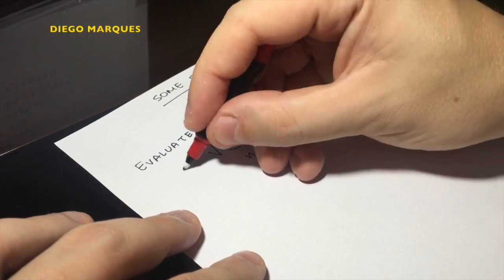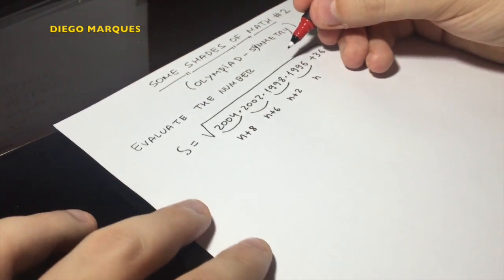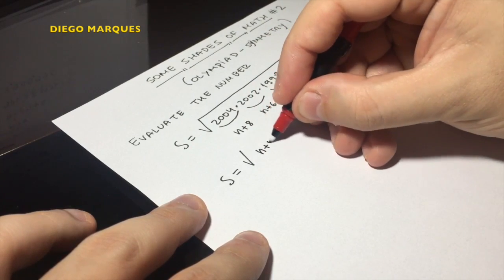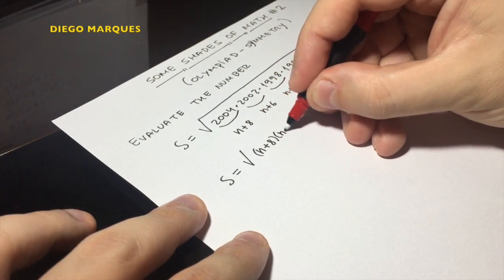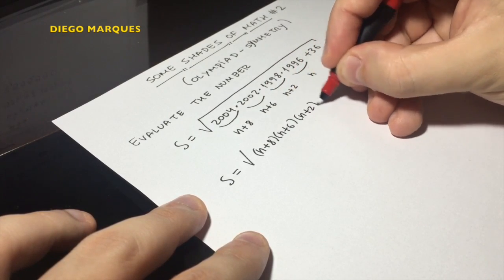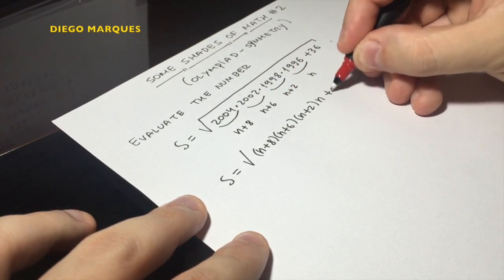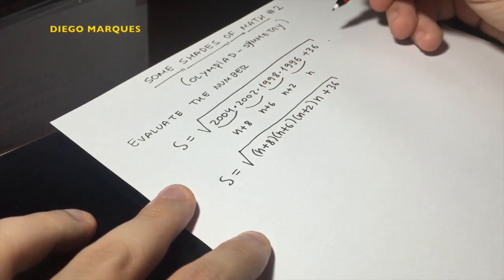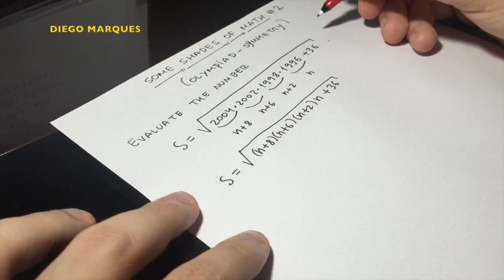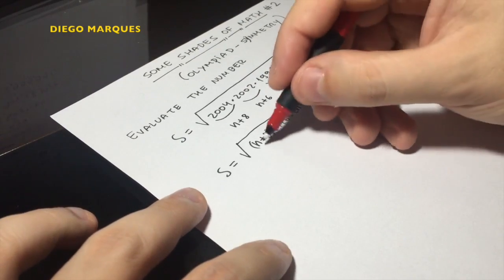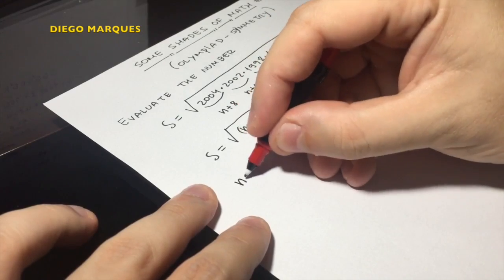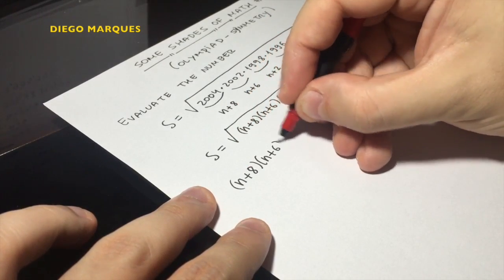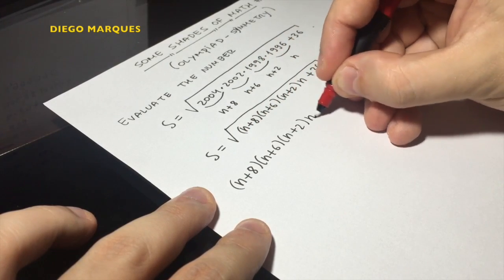So our number s is actually square root of n plus 8 times n plus 6 times n plus 2 times n plus 36. Okay, so now let's consider only this product. The product is n plus 8 times n plus 6 times n plus 2 times n.